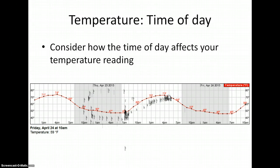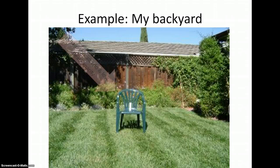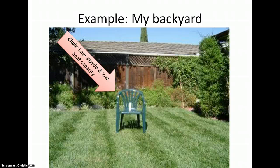Let's apply this to an example setup in my backyard. Notice that the dark colored plastic chair that I have propped the thermometer on has a low albedo and low heat capacity, so it will heat up quickly. Because of this, I keep the chair in the shade until it is time to take the temperature reading. Then I put the chair and the thermometer out for about 5 minutes.